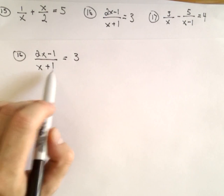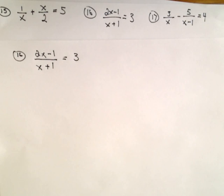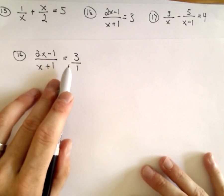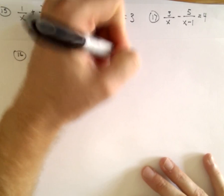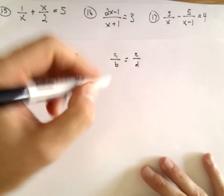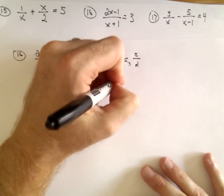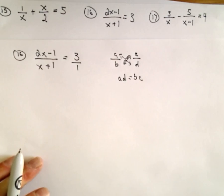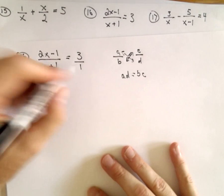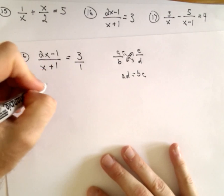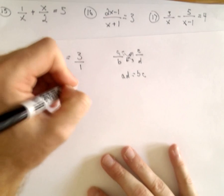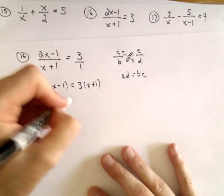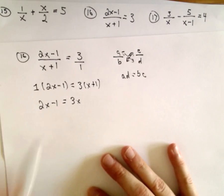Number 16, 2x minus 1 over x plus 1 equals 3. We can write 3 as 3 over 1. What I'm going to do is just cross multiply. When you have a fraction equals a fraction, that's usually what I do. If you have a over b equals c over d, remember you can just multiply a times d equals b times c. That's the cross multiplication. I'm going to put in parentheses just to emphasize we have to distribute, so you'd have 1 times 2x minus 1, and then we would have 3 times x plus 1. We've got 2x minus 1, we've got to distribute, we'd have 3x plus 3.